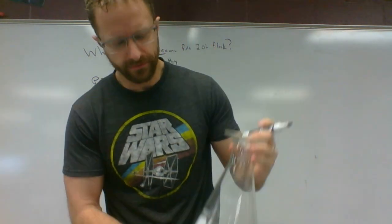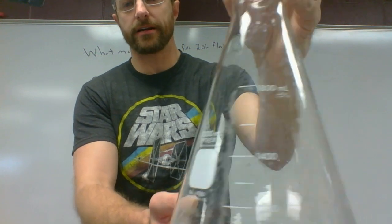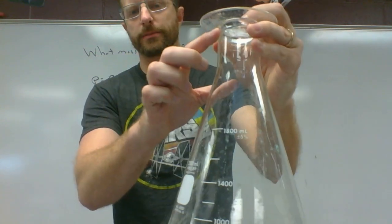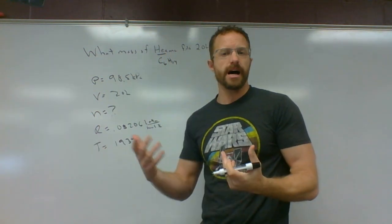Our volume is 2.0 liters. Now you want to be careful. Students get volumes wrong on flasks all the time. They'll look at something like this and they'll say it's an 1800 milliliter flask. Well, 1800 milliliters is here. Two liters is clear up to the top. So when we say a 250 milliliter beaker, that's filled to the top pretty well.